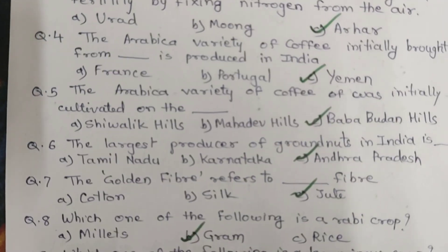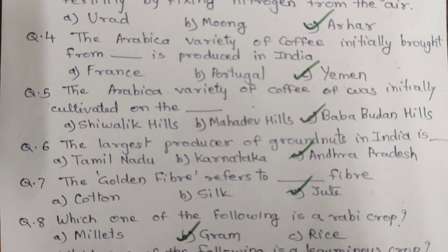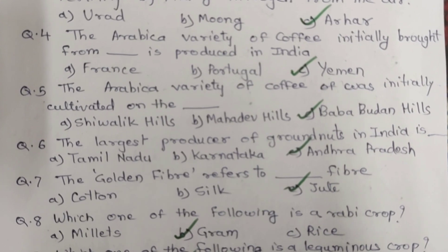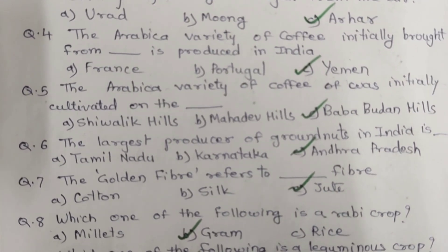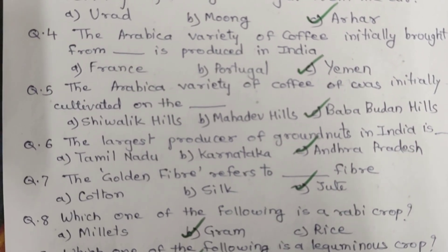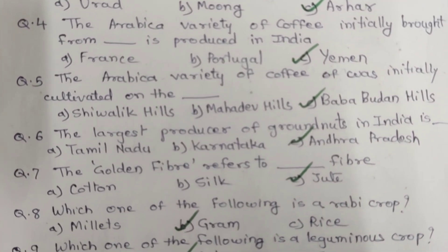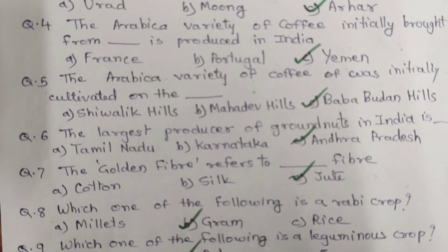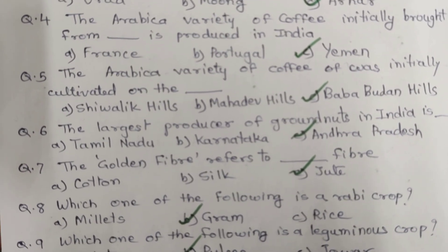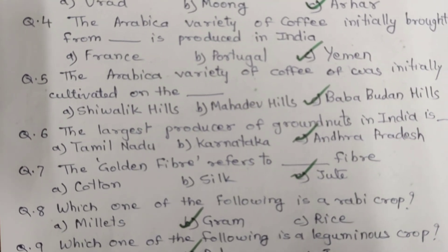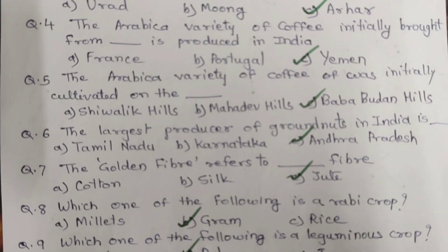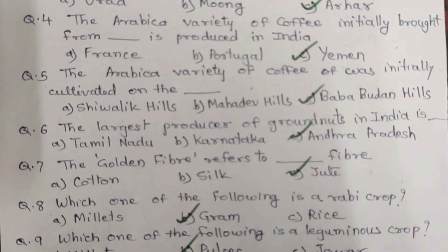Question 4. The Arabica variety of coffee initially brought from which country is produced in India? Options are A. France. B. Portugal. C. Yemen. And the correct answer is C. Yemen.